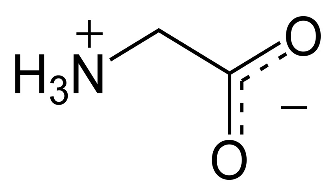Glycine is a colorless, sweet-tasting crystalline solid. It is the only achiral proteinogenic amino acid. It can fit into hydrophilic or hydrophobic environments due to its minimal side chain of only one hydrogen atom. The acyl radical is glycyl.